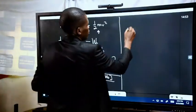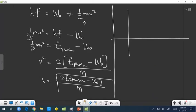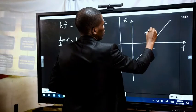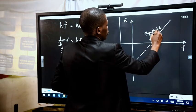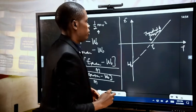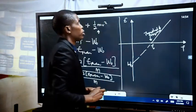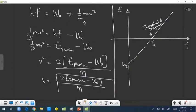At this point we have the work function. We can sketch this: on the vertical axis we have energy; on the horizontal axis we have frequency. This point is the work function of the metal. This point here is the threshold frequency — the minimum frequency at which the photon radiation can emit the electron. This graph represents the relationship between photon energy and the frequency of electromagnetic radiation.